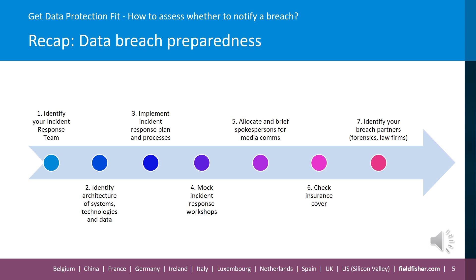Number six: carefully check your insurance cover and ensure that it covers a personal data breach. It's important to be aware of any exclusions or conditions that, if not complied with, could invalidate the insurance — for example, insurers may have specified security measures you must have implemented. Finally, identify your breach partners and ensure you've negotiated engagement terms and signed contracts with them prior to suffering a breach. This could include IT forensic experts, legal advisors, IS consultants, and credit monitoring vendors.